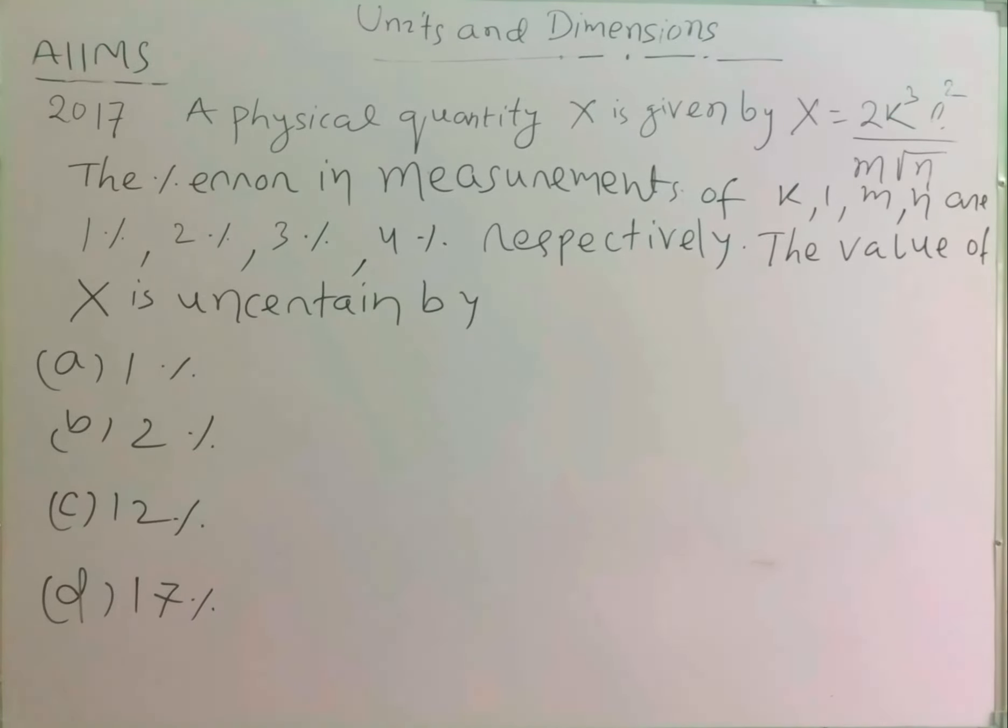Students, this question was asked in AIIMS year 2017 from the chapter Units and Dimensions. The question asks: a physical quantity X is given by X equals 2KQ L² M½ over N. The percentage error in measurements of K, L, M, N are 1%, 2%, 3%, 4% respectively.